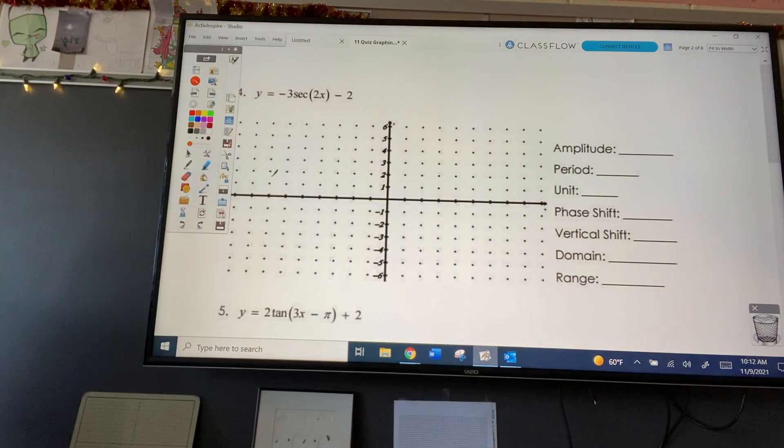All right, so we're on number four. Y equals negative secant of 2x minus 2. All right, so what are we thinking? What graph are we going to think about? Okay, we're thinking about graphing y equals negative 3 cosine 2x minus 2.